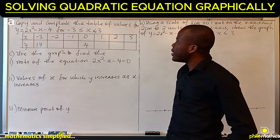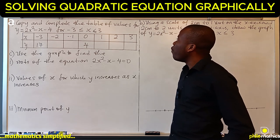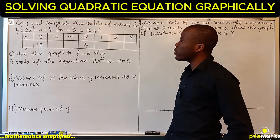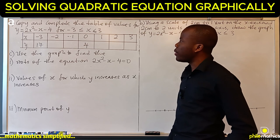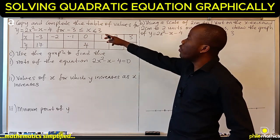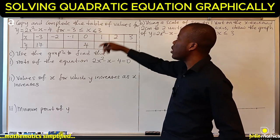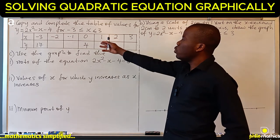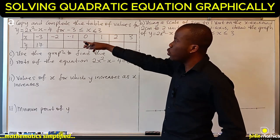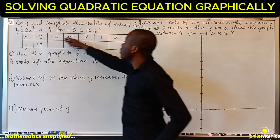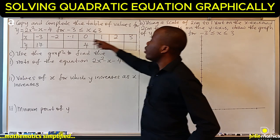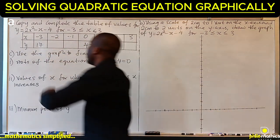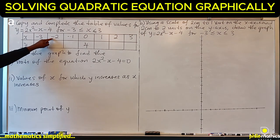Copy and complete the table of values for y equals 2x squared minus x minus 4, for the range of x starting from minus 3 to 3 inclusive. What we have to do to complete this table is to substitute the values of x into this equation and find what y is.